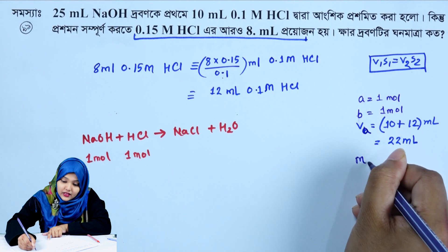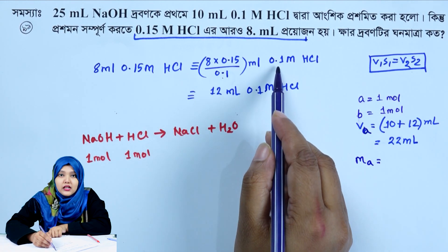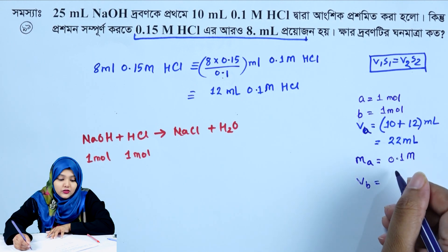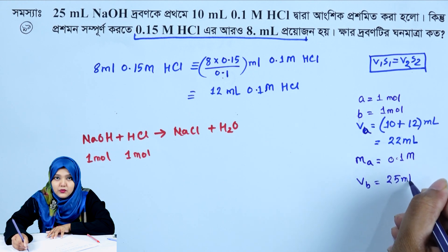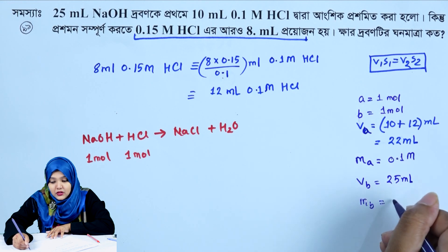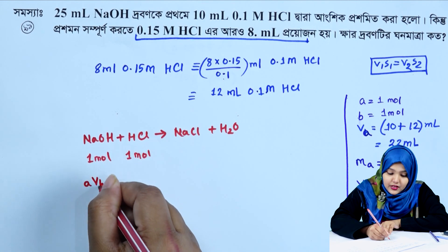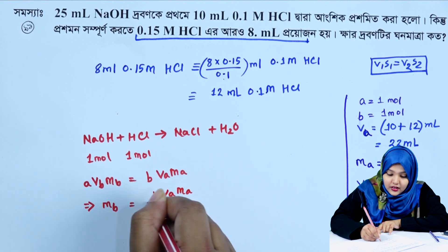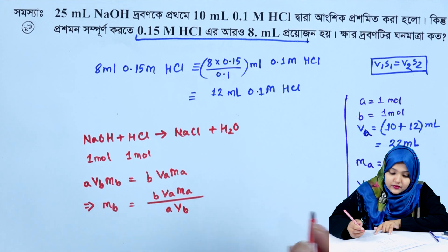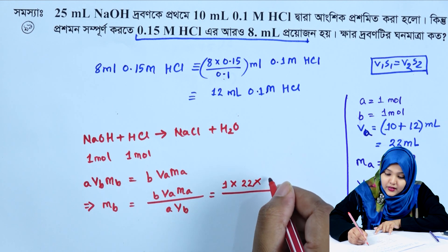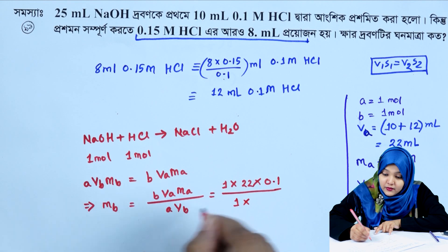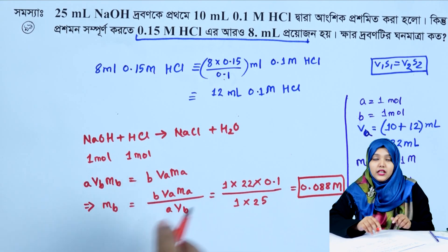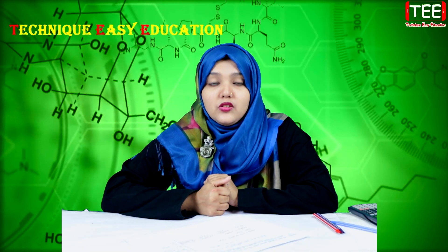Acid is equal to 2 molar. Ma is equal to 0.1 molar. VB is equal to 25 milliliter. MB = (VA × MA) / (a × VB) = (22 × 0.1) / (1 × 25) = 0.088 molar. So the concentration (molarity) is 0.088 molar. That's how it comes to the end of the video.